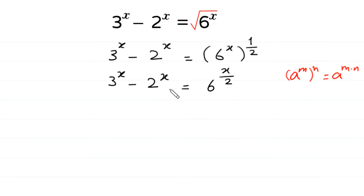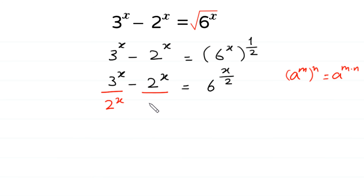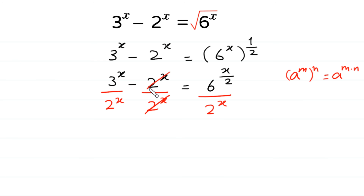Next, we divide both sides by 2 to the power x. We divide each term by 2 to the power x — the first term divided by 2 to the power x, the second term divided by 2 to the power x. This 2 to the power x will be cancelled with this 2 to the power x, and here we are left with 1.